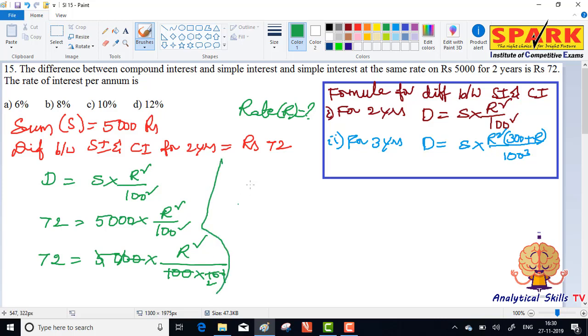So next step: r square equal to 2 into 72. Cross multiply: 2 into 72 is 144. 144 is 12 square. From this, r is equal to 12. 12 percent is the answer.